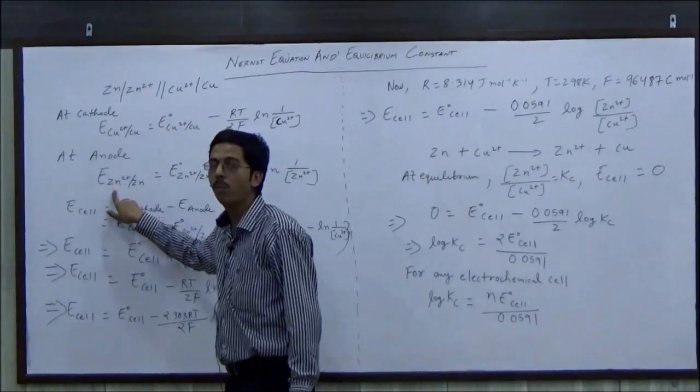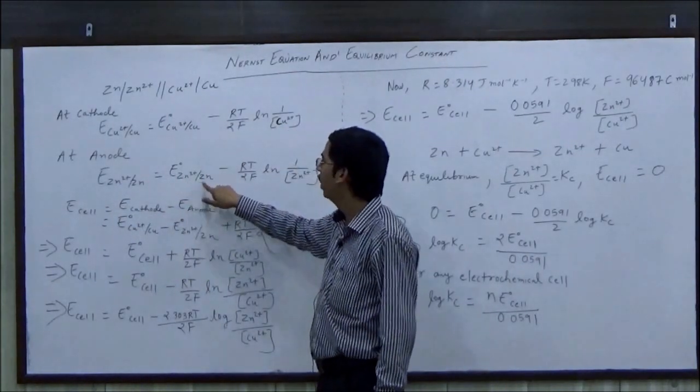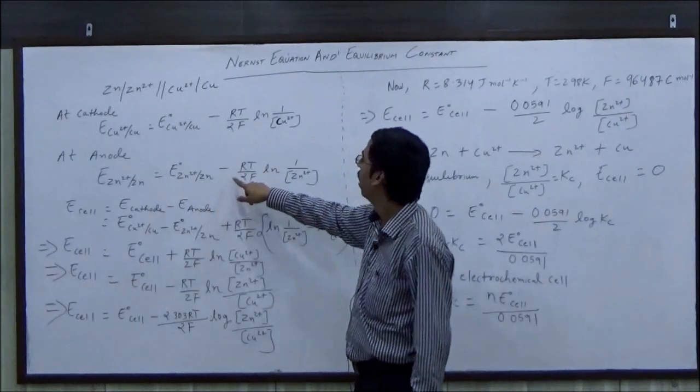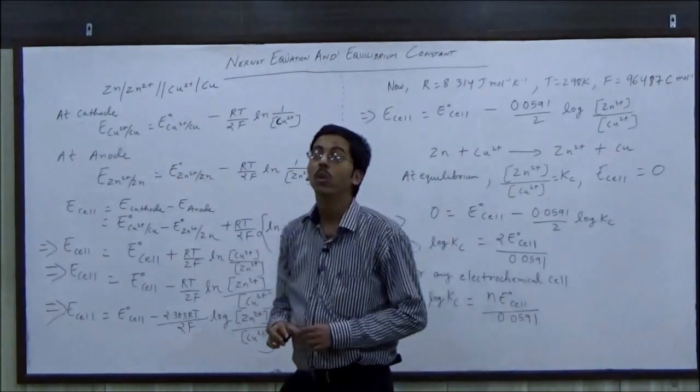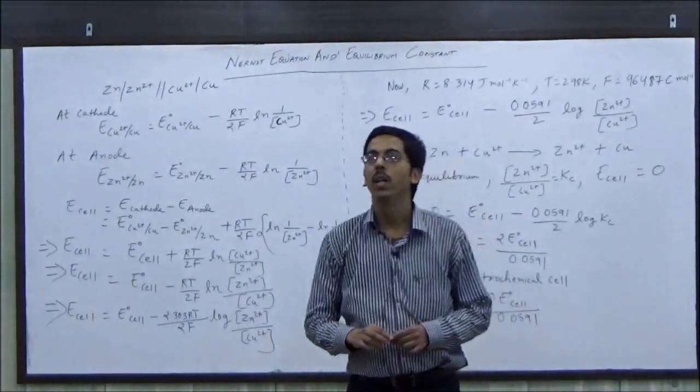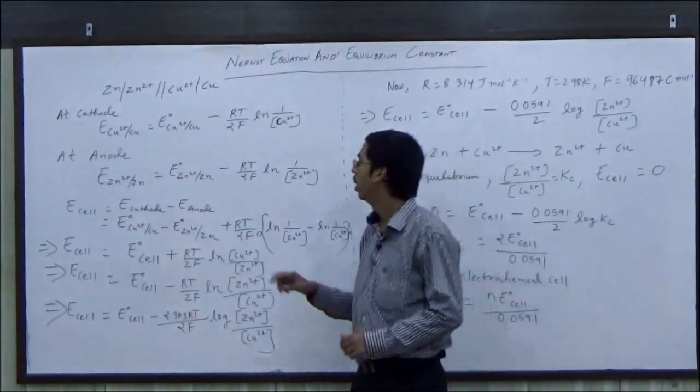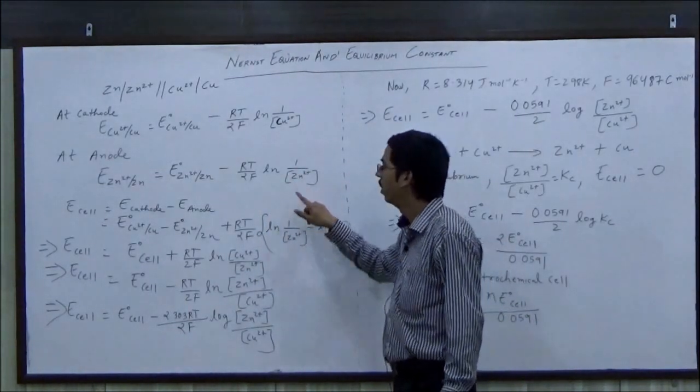Similarly, at anode, electrode potential is equal to E0 Zn2+/Zn minus RT by nF. Here n is 2, because to convert zinc metal to Zn2+ ion, we lose two electrons. ln 1 upon Zn2+ concentration.